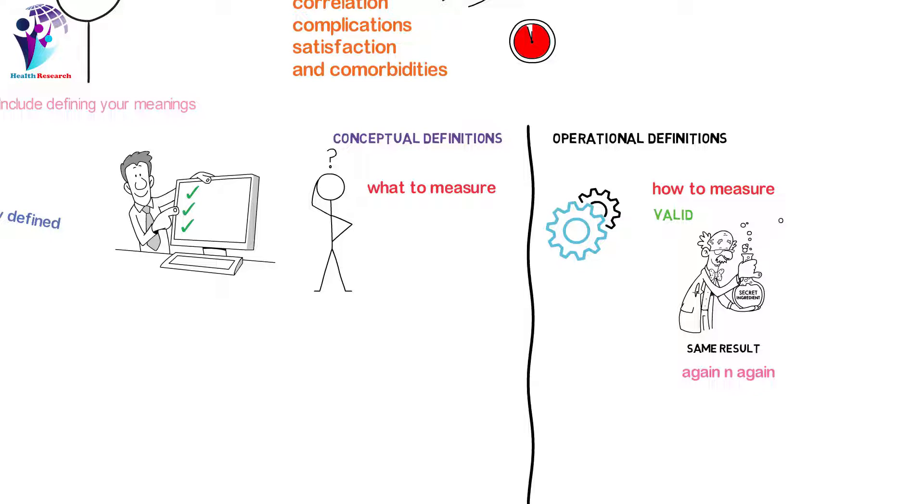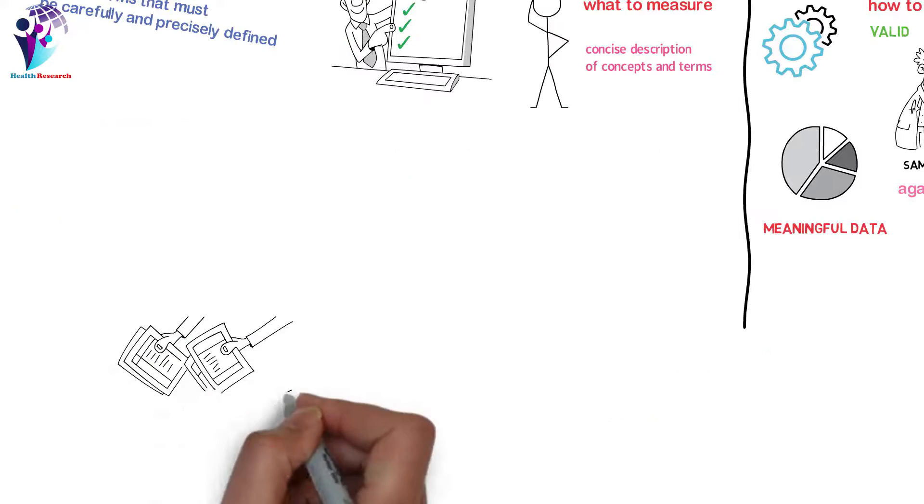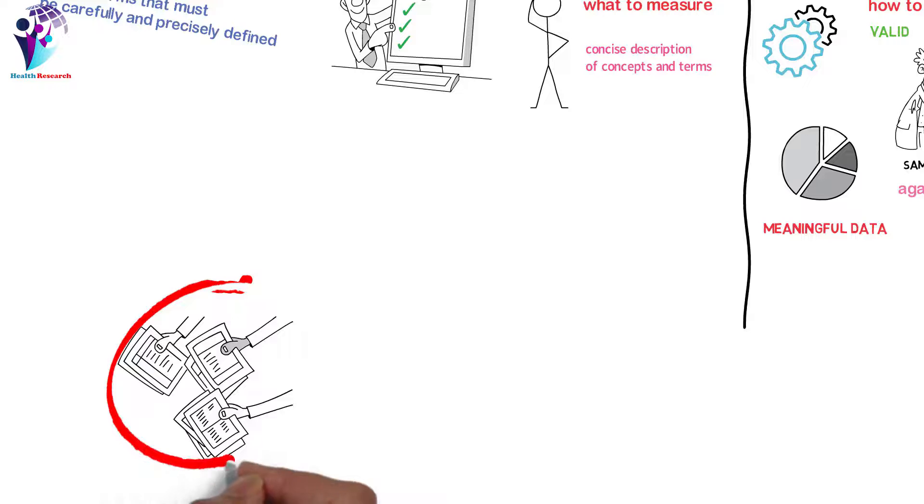An operational definition ensures a concise description of concepts and terms applied to a specific situation to facilitate the collection of meaningful and standardized data. When collecting data, it is important to define every term very clearly to assure all those who collect and analyze the data have the same understanding.